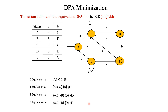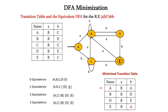Now, we have found the equivalent states. Next, we have to construct the minimized transition table. In this, both A and C are equivalent. So, instead of having two states, we can have only one state, that is A. So, we can remove C and wherever we have C, we can replace it with A. According to this table, we have removed the row C and replaced all occurrences of C with A. So, this is the minimized transition table.